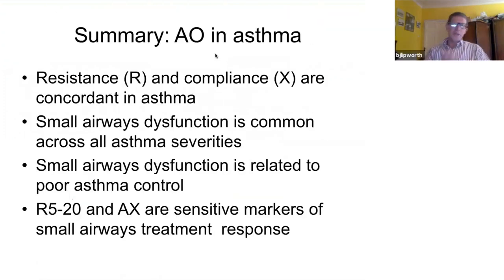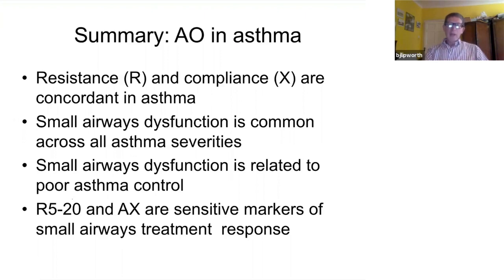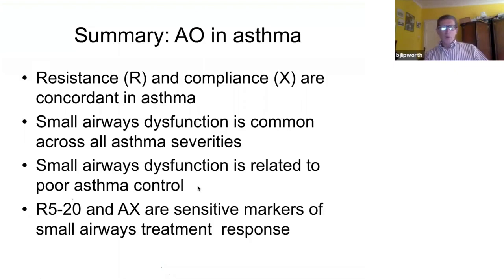Before we move on to COPD, let's tie this up. What we've shown so far is that resistance and compliance are concordant in asthma — they go in the same direction, so when resistance falls, compliance increases. Small airways dysfunction is common across all asthma severities — not only in severe asthma but also in mild and moderate. It's related to poor asthma control in terms of steroid use, salbutamol consumption, or the asthma control questionnaire, and peripheral airway resistance and the area under the reactance curve are sensitive markers of response to treatment with small particle inhalers.